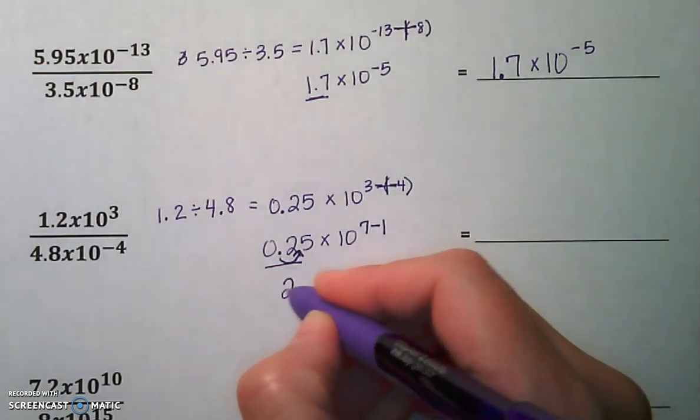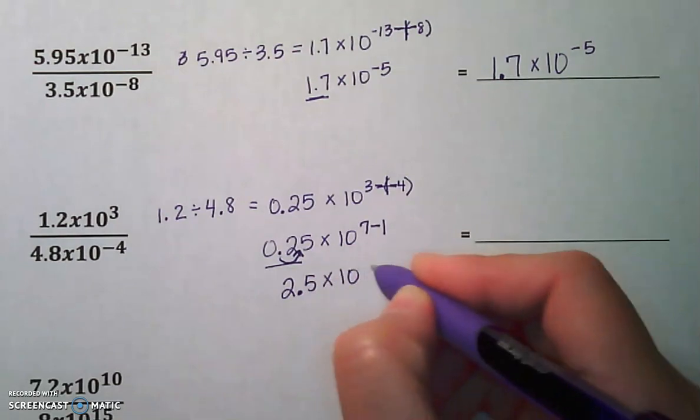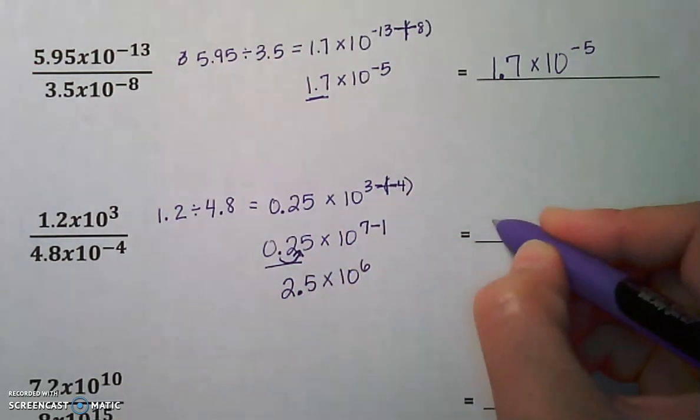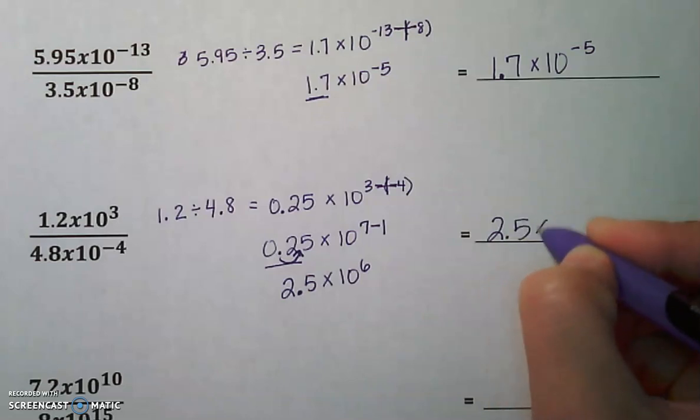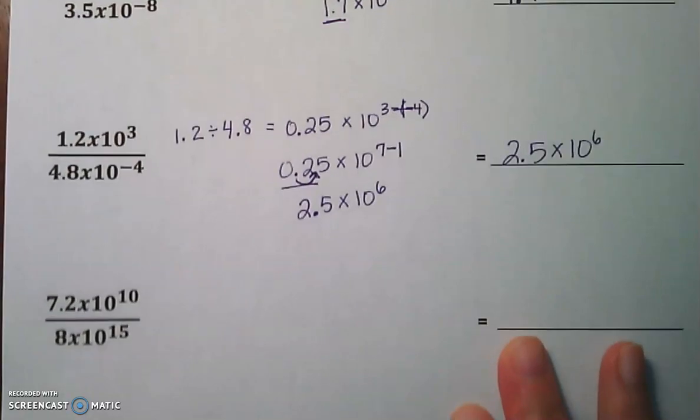So our decimal now becomes 2.5 times 10. 7 minus 1 is 6. So 2.5 times 10 to the 6 is our final answer. The last example.